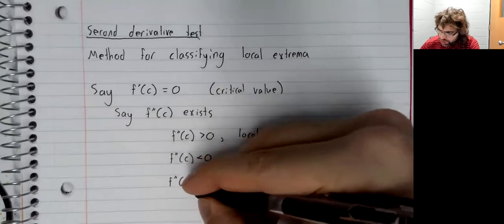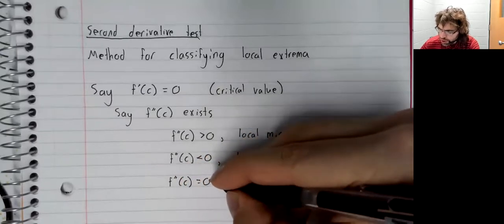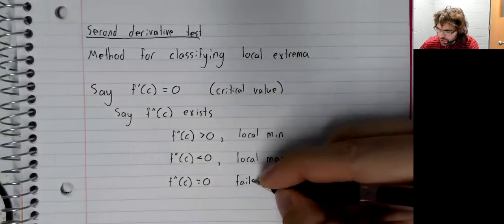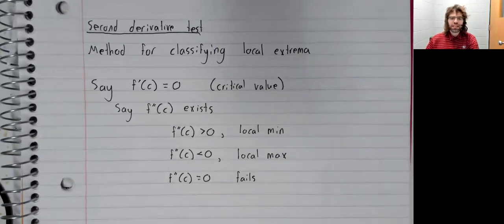If the second derivative equals zero, the second derivative test fails and we don't get any useful information.